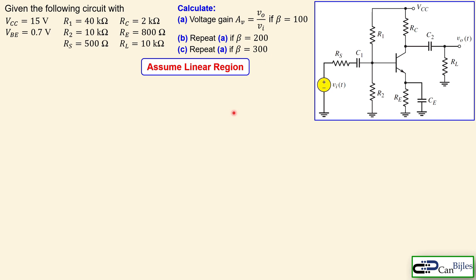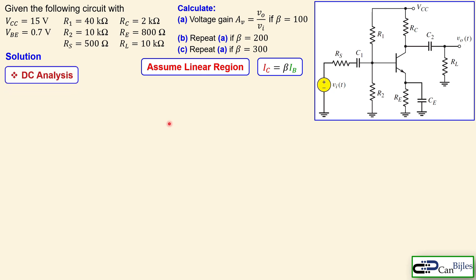We assume the BJT is in the linear region of operation, so the collector current equals the base current times beta. Let's look at the solutions for this voltage gain expression.